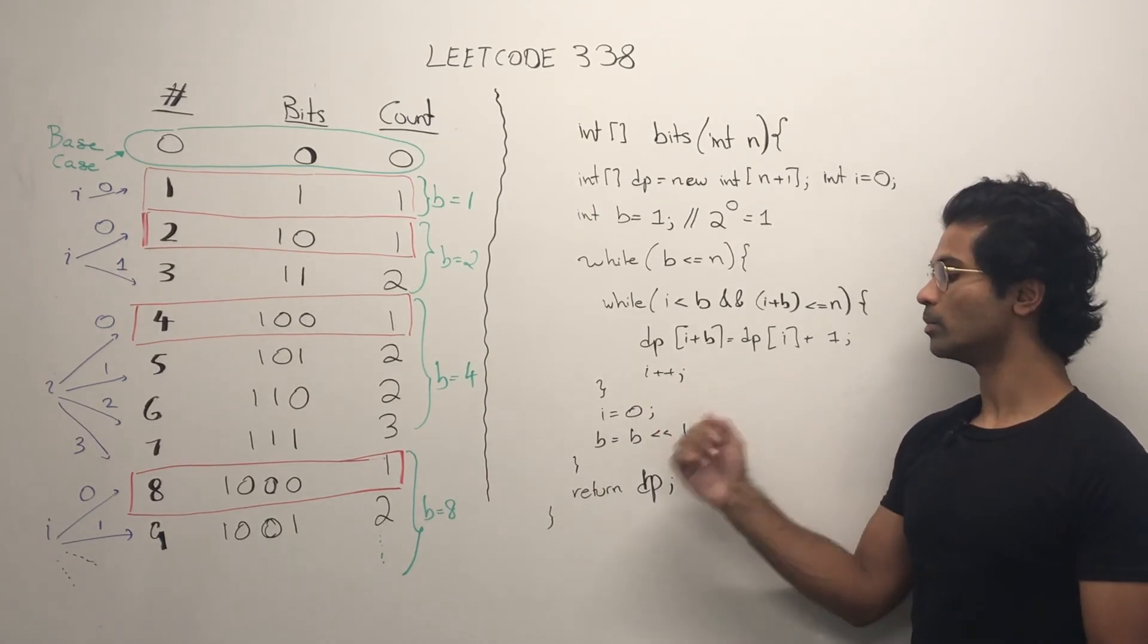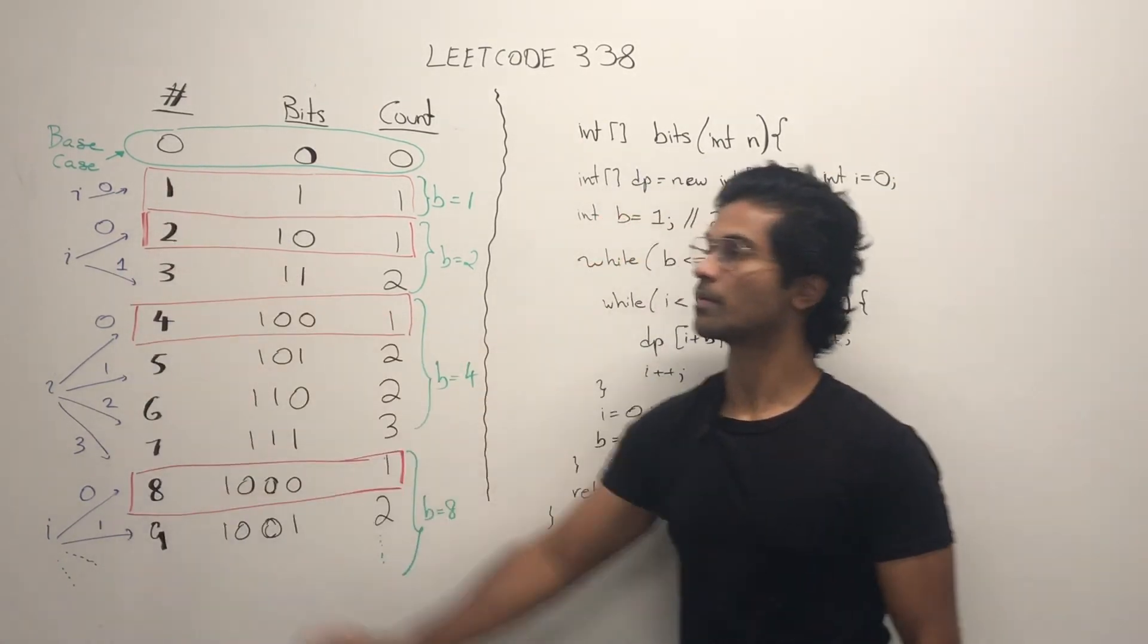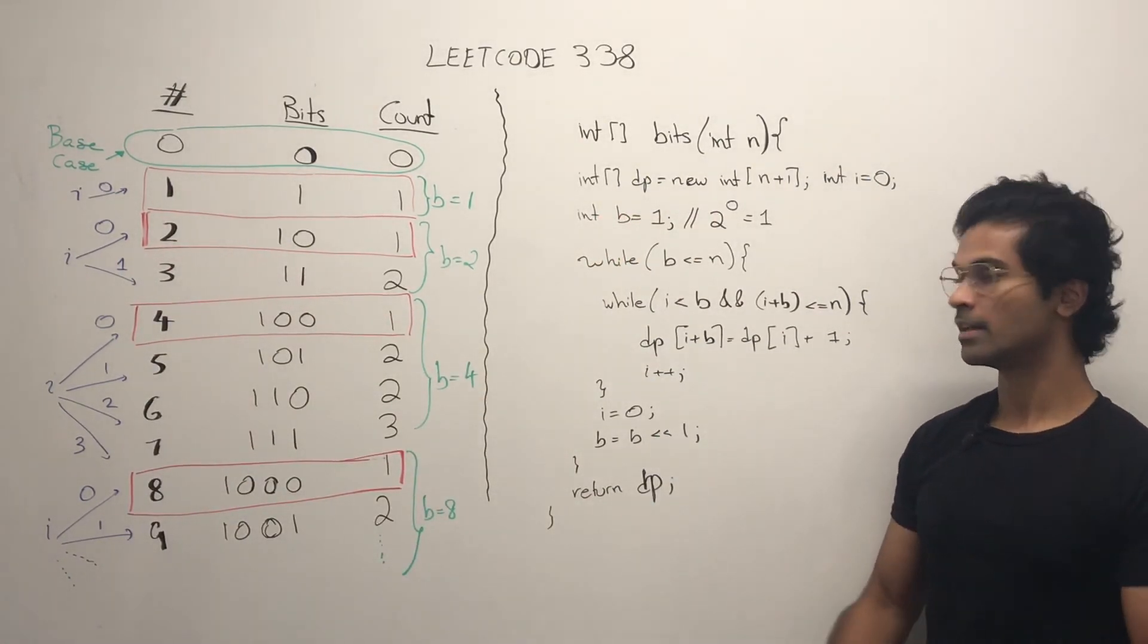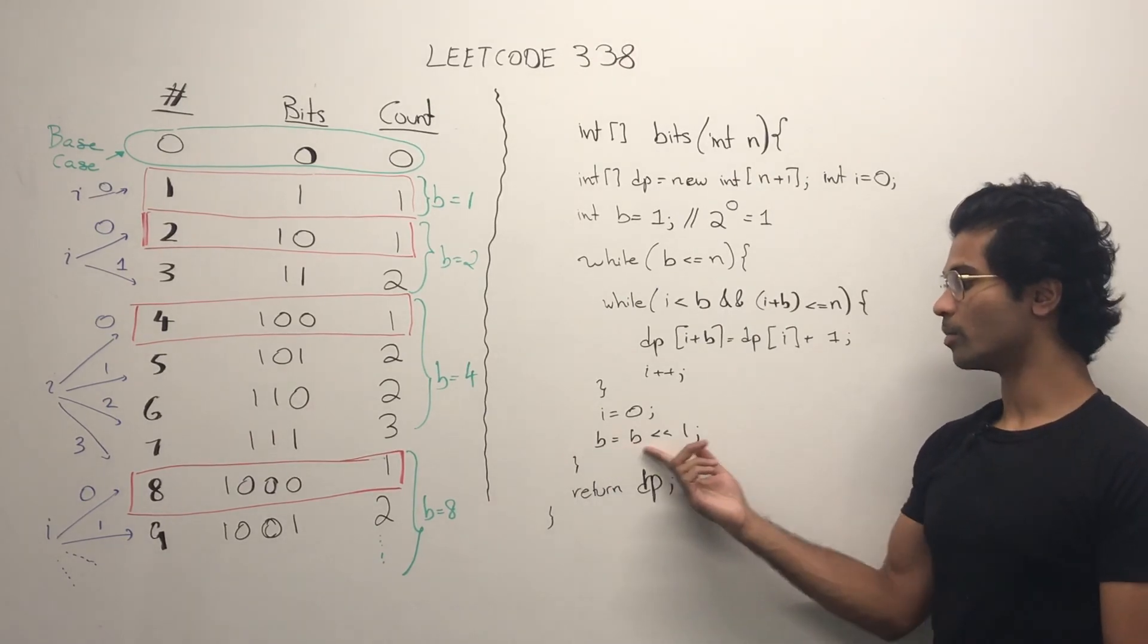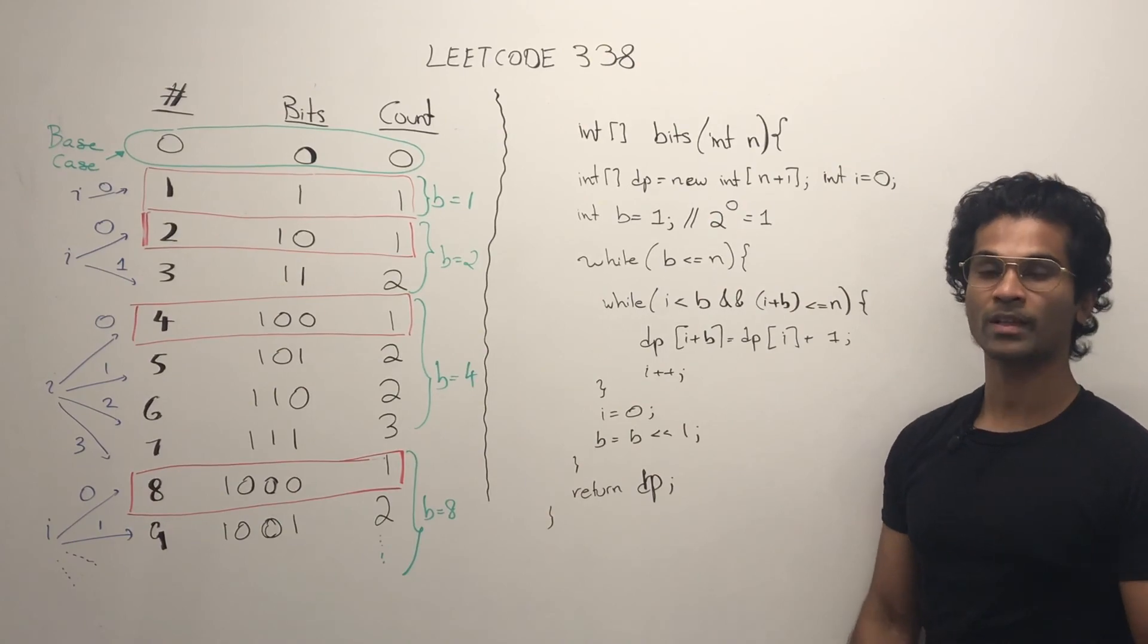Once we're done with the inner while loop, we reset i as equal to 0 because it's a temporary pointer for each block of B. Then we just double our B block, and ultimately we fill up our DP table, and we can return it.